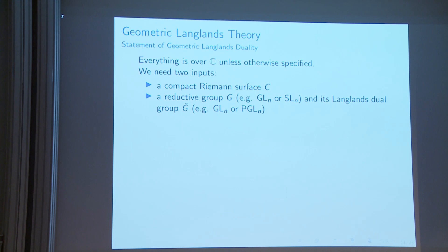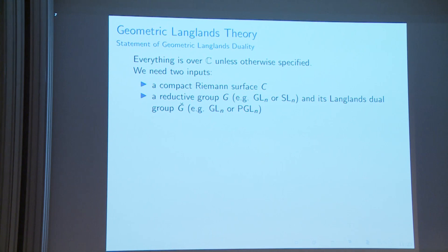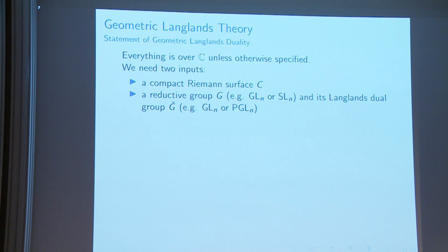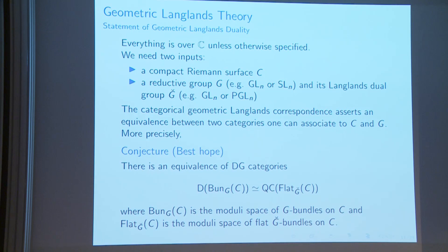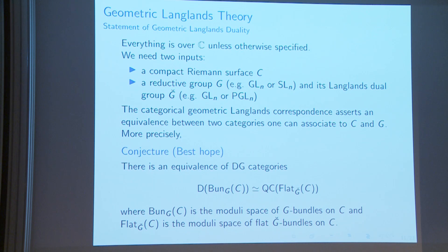The input data are a compact surface and a group like GL_n, along with a Langlands dual group. The Langlands correspondence expects an equivalence between two categories. The well-known version is the best hope: D-modules on the moduli space of G-bundles on a Riemann surface C, and quasi-coherent sheaves on the moduli space of flat G-check connections on C — an equivalence between these two different categories.